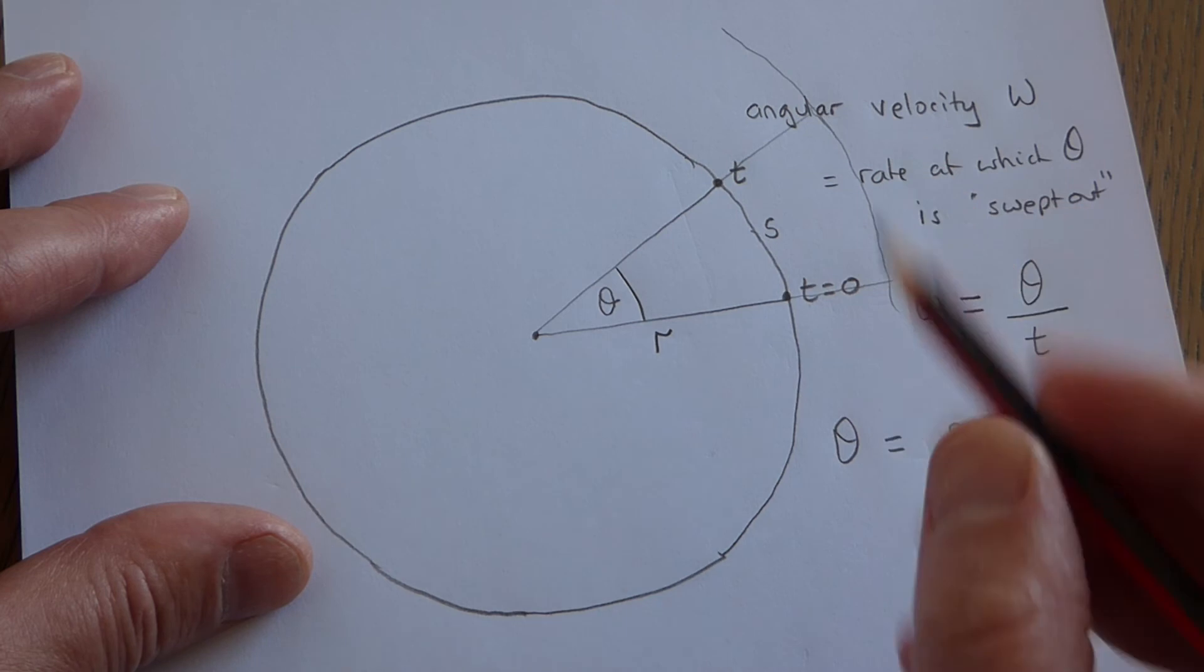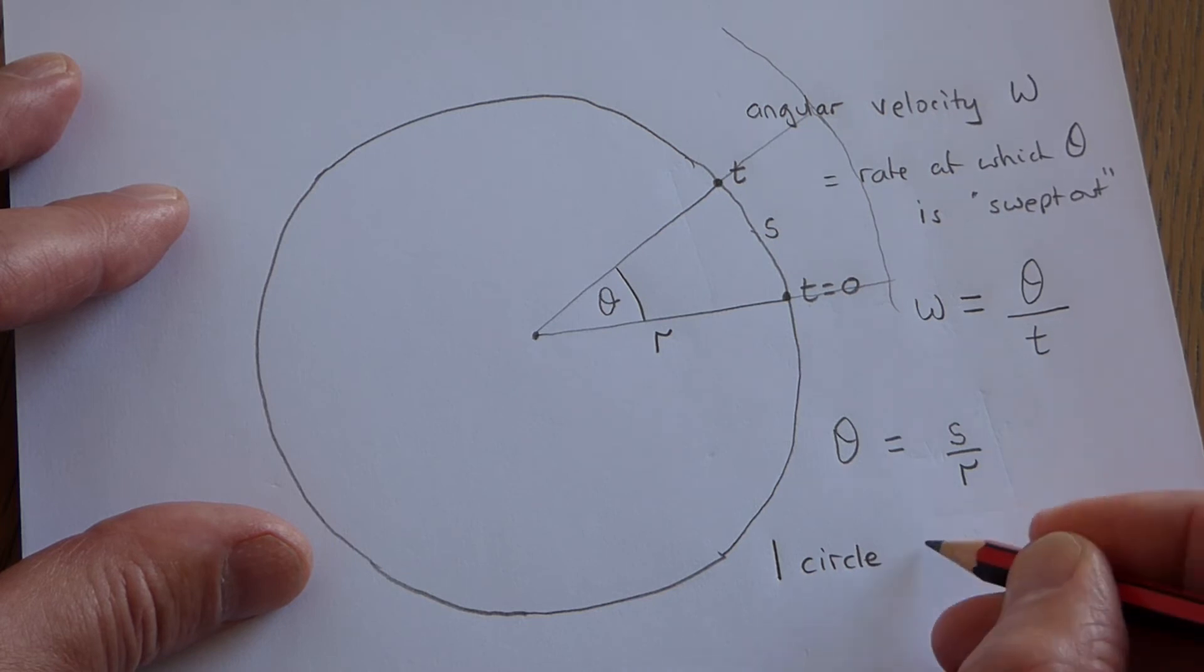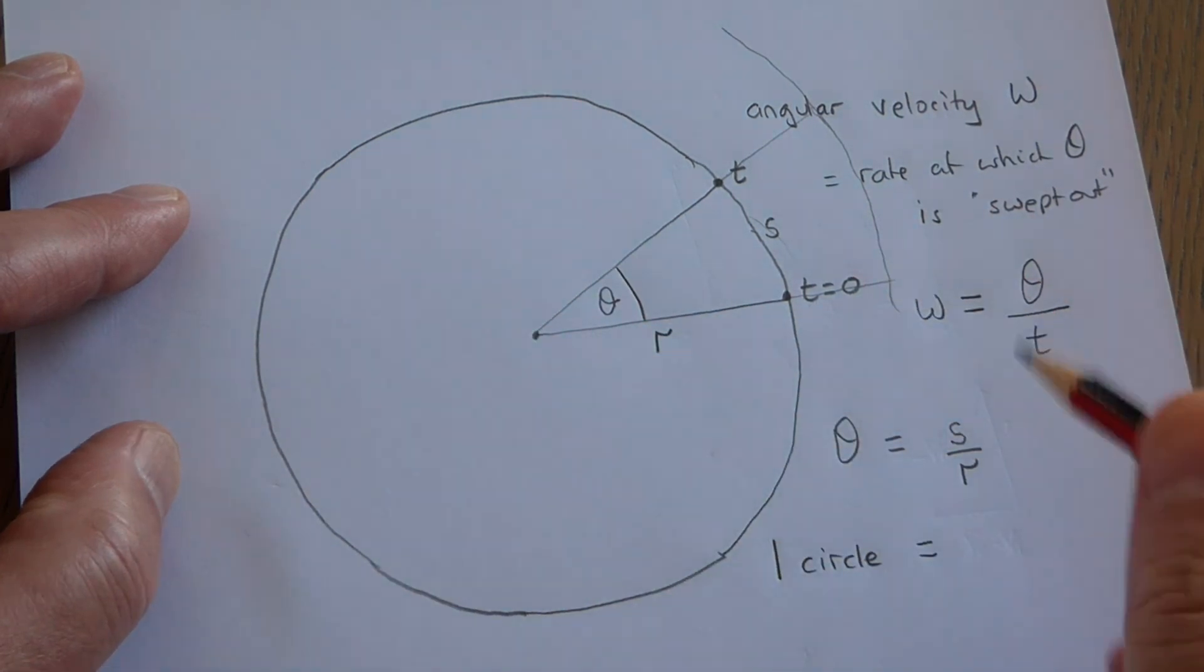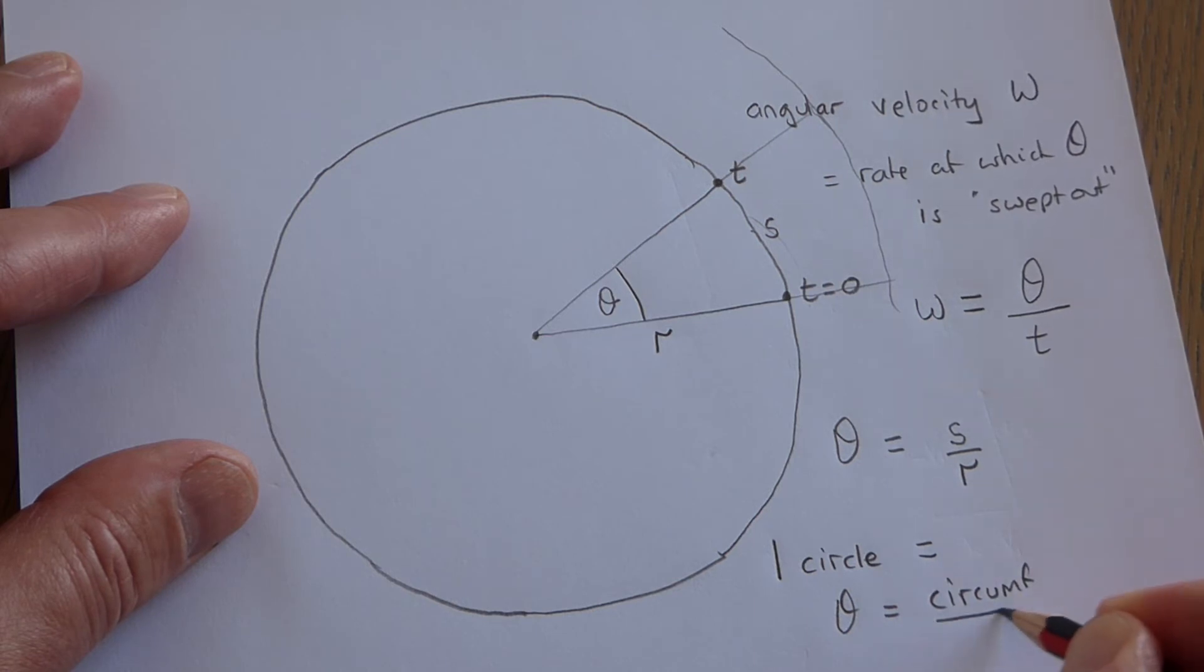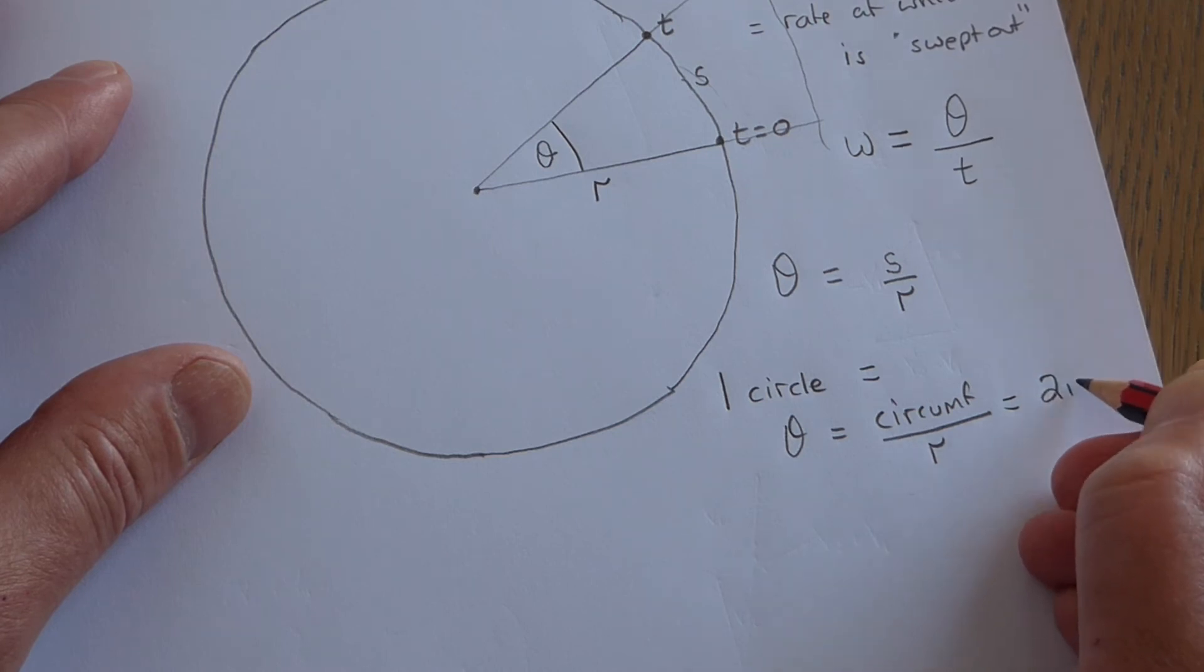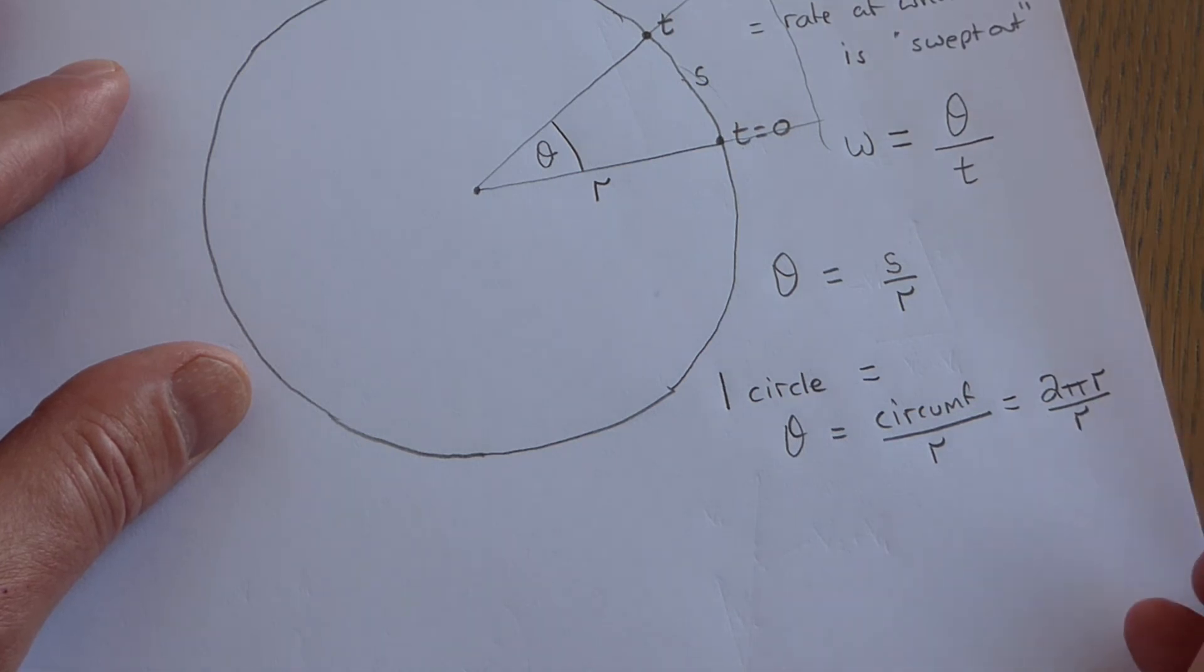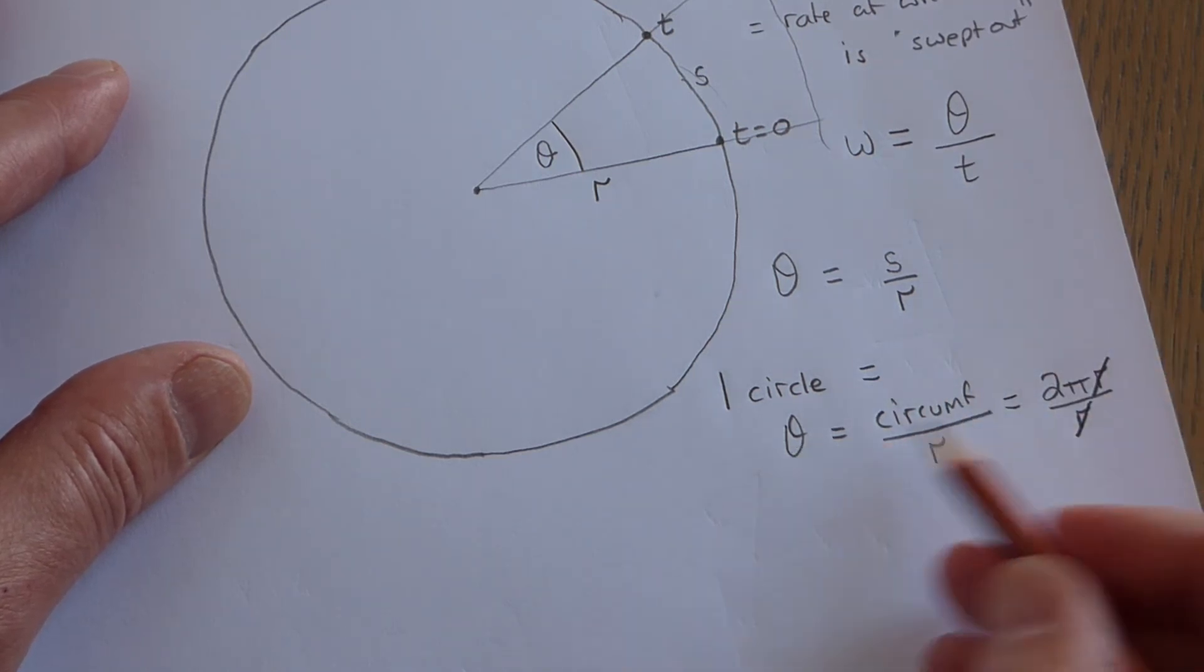What that means then is this. If I allow the object to go one complete circle, then the arc length will become one complete circumference. So the value of theta for one circle would be the circumference of that circle, and then you divide by the radius of that circle. Now of course, the circumference of a circle is 2πr, and you divide that by the radius of the circle, and the r's cancel. And that means that your angle theta is 2π.